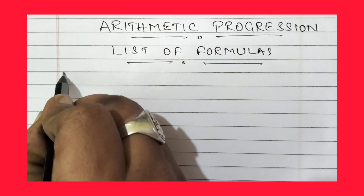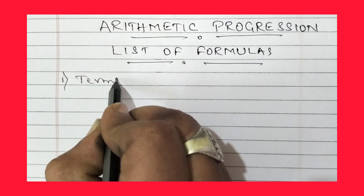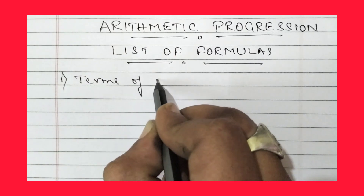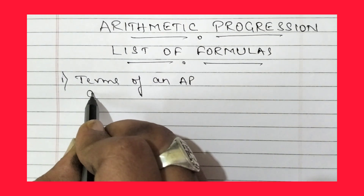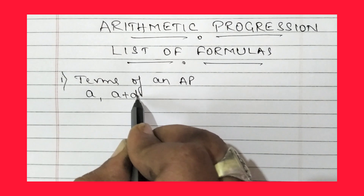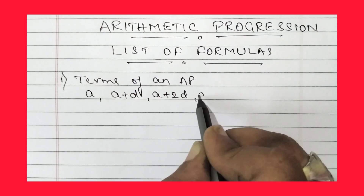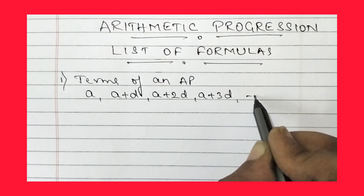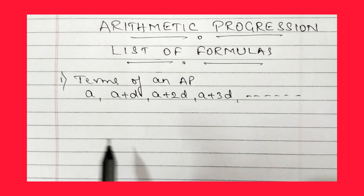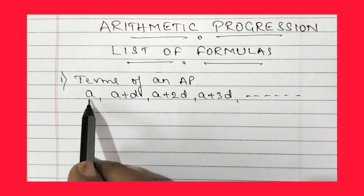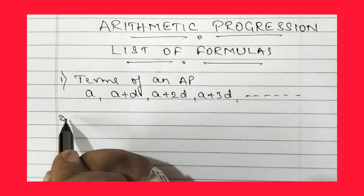The first one in the list is the terms of an AP. The terms of an AP are: a, a+d, a+2d, a+3d, and so on. There are many terms, we cannot write all of them, so these — a, a+d, a+2d, a+3d — are the terms of an AP.